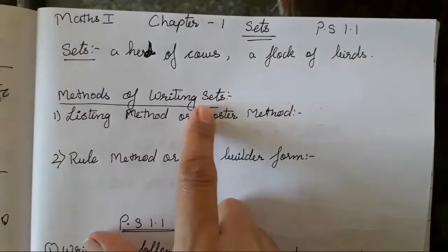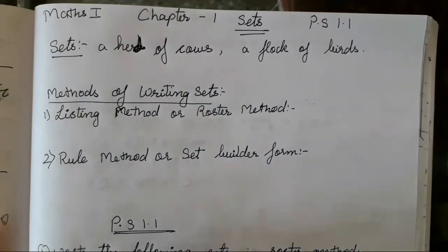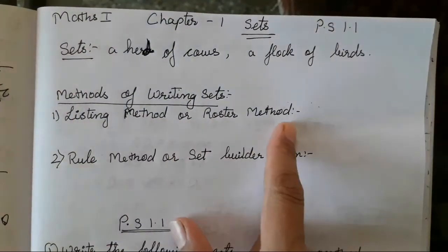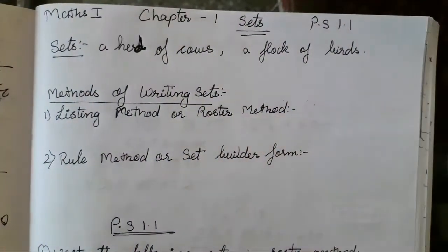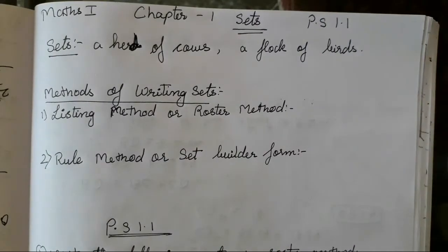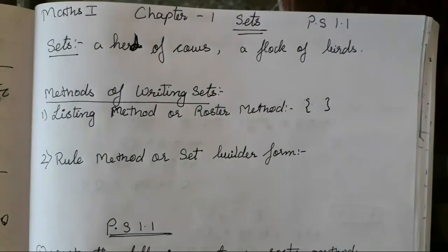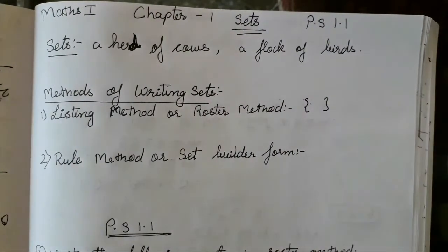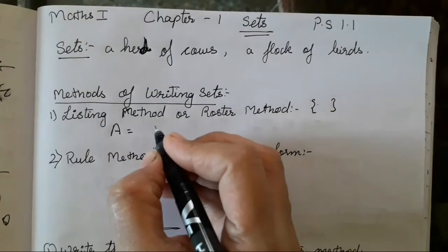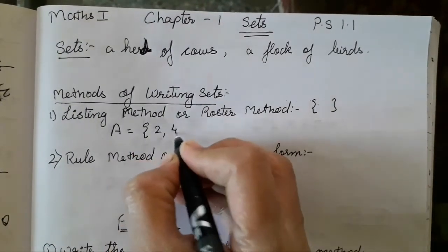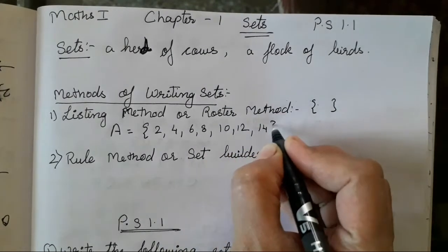Now there are two methods of writing sets. So there are two forms of categorizing the given thing. First is the listing method or roaster method. When we put all the elements of the sets enclosed into such a bracket, they represent sets. So listing method or roaster method, I will give you one example like 2, 4, 6, 8, 10, 12, 14.